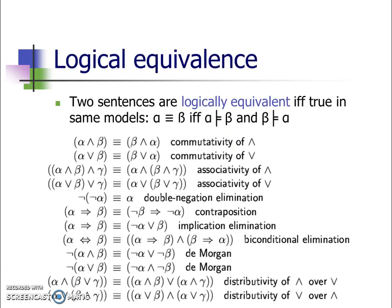To start with, the knowledge base consists of statements. Statements are atomic statements or they are complex statements. At any given point, two statements in a knowledge base are logically equivalent if and only if they are true in the same model. A model is a task environment in which the agent operates. So two statements, alpha and beta, are equivalent to each other if and only if alpha as a knowledge base entails beta, and beta as a knowledge base entails alpha.